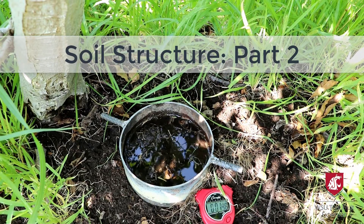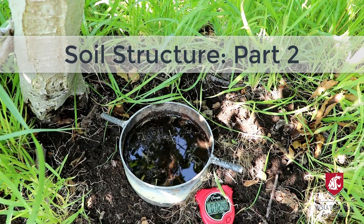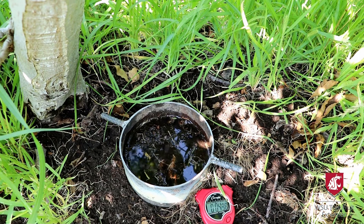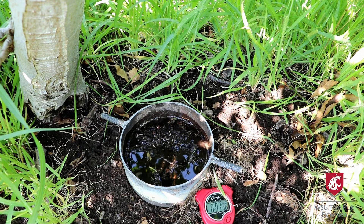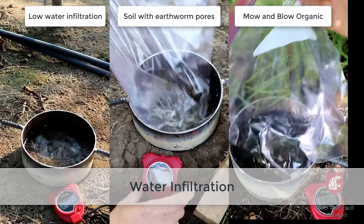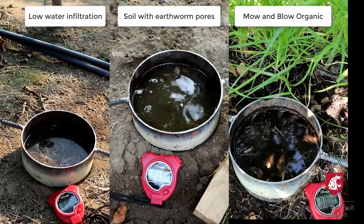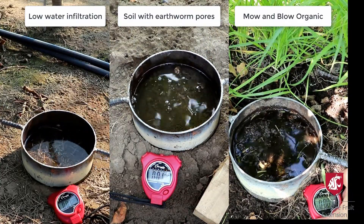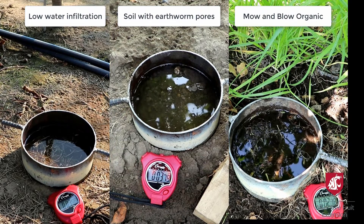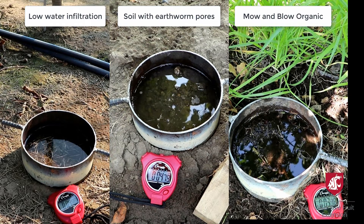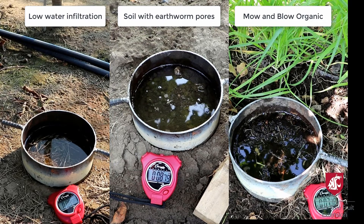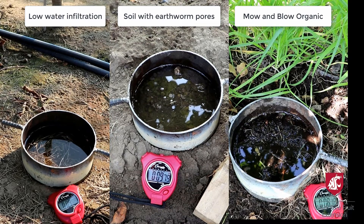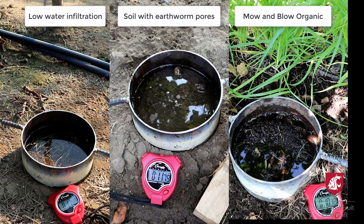Another indicator of soil structure is water infiltration. We measure water infiltration by pounding a ring into the soil and recording how long it takes for one inch of water to infiltrate. In soils with lots of aggregation and low compaction, large pores caused by earthworms and plant roots will allow water to infiltrate quickly and little water will run off.